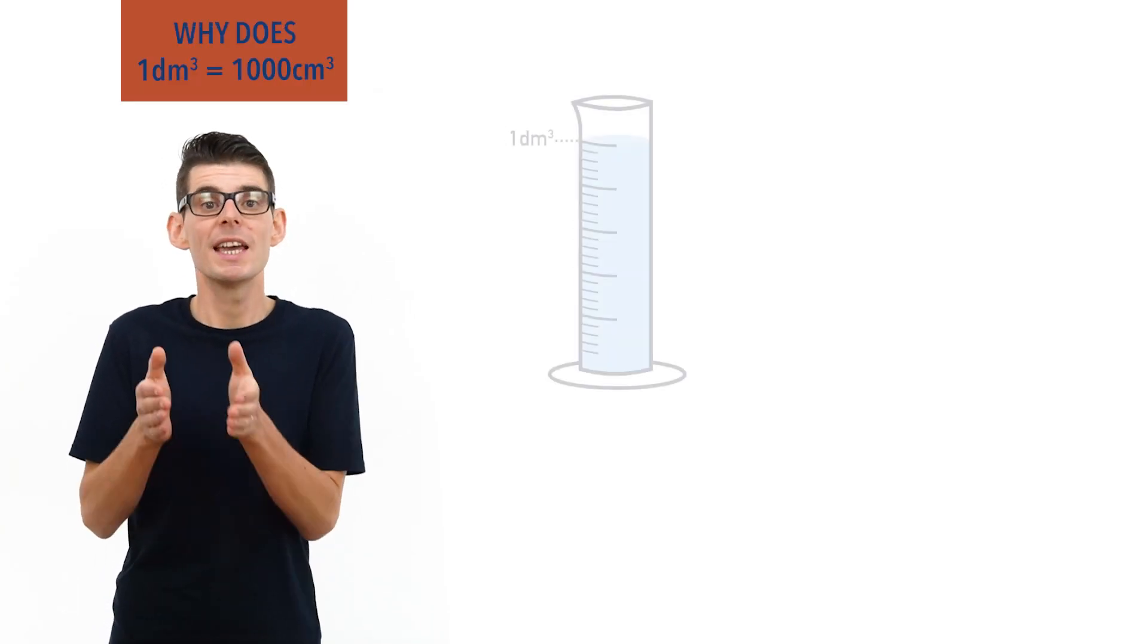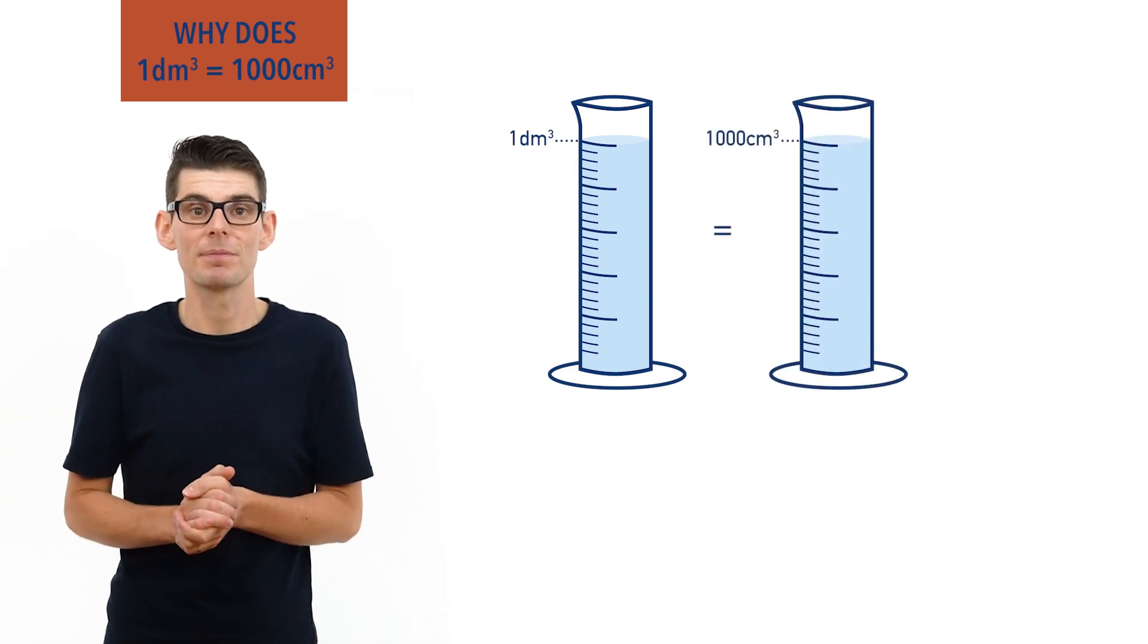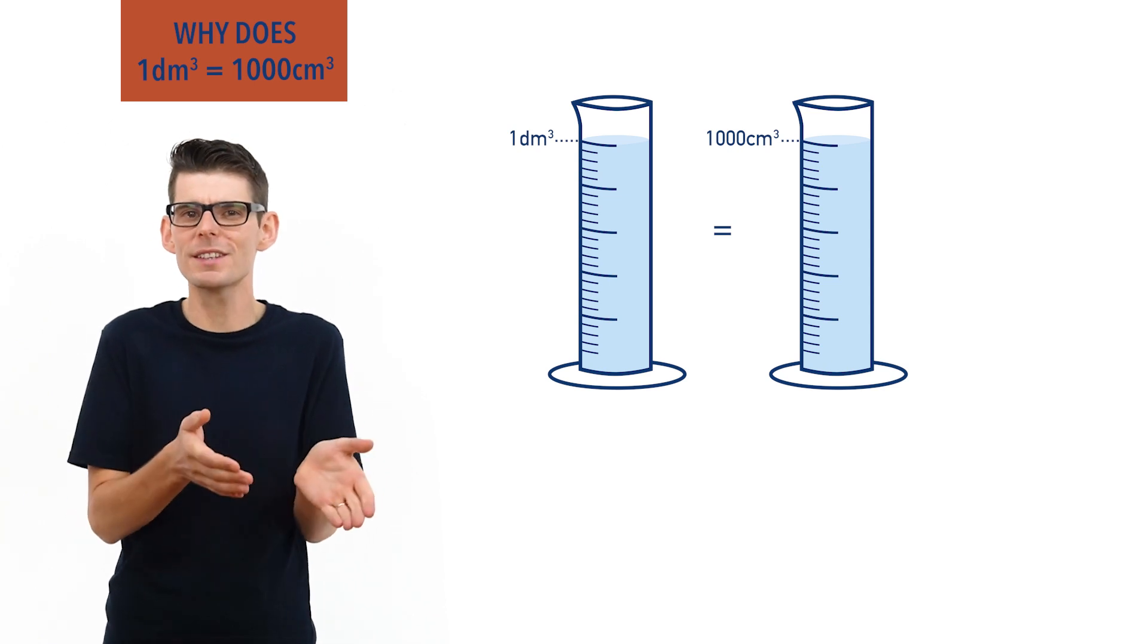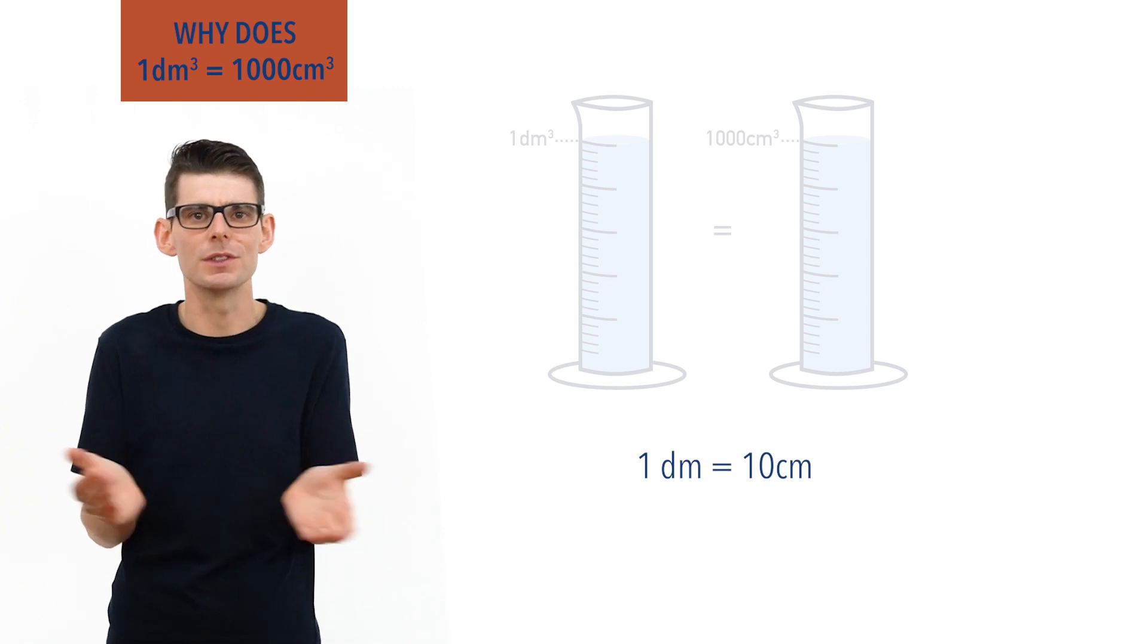1 decimetre cubed is the same volume as 1000 centimetres cubed. This may seem strange when you see this for the first time, as 1 decimetre equals 10 centimetres. Where does the 1000 come from then?